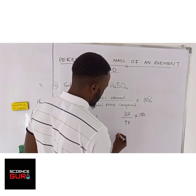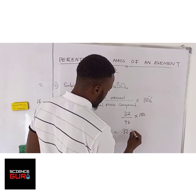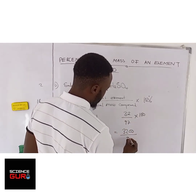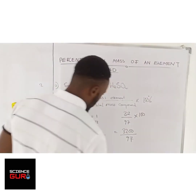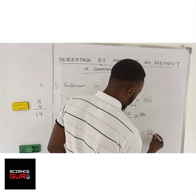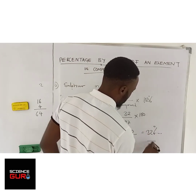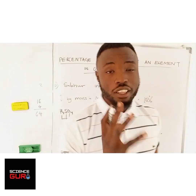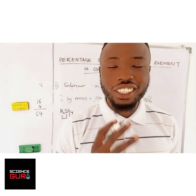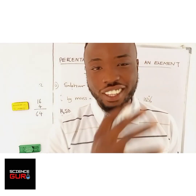32 over 97 times 100% gives you approximately 32-point-something percent. And you have found the percentage mass of an element. Thank you for watching this lesson. This has been your tutor, the Science Guru, Mr. Mubiana. Thank you.